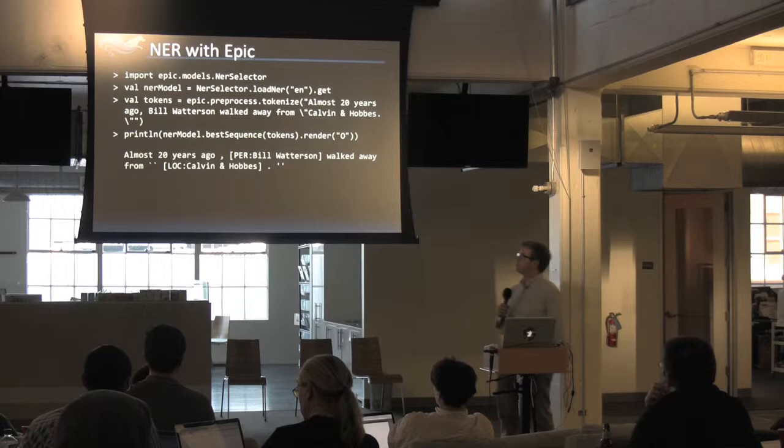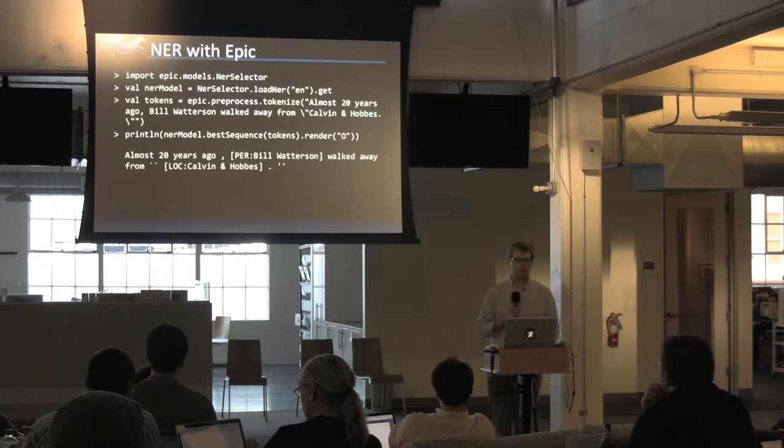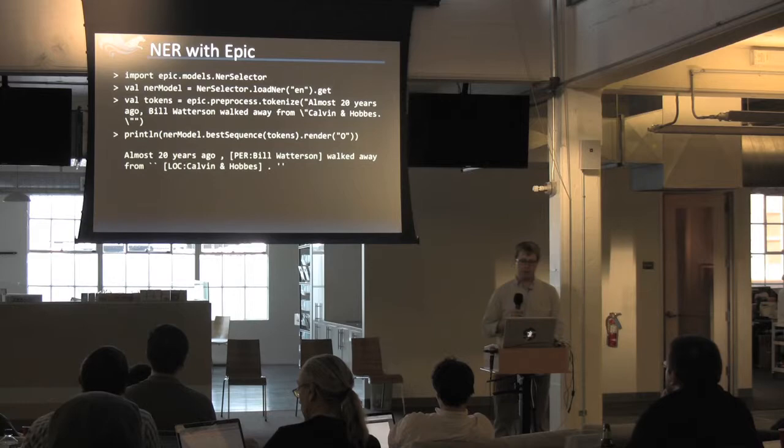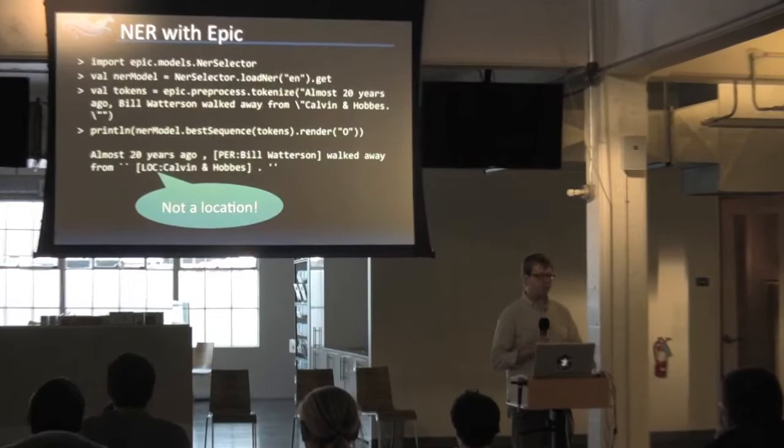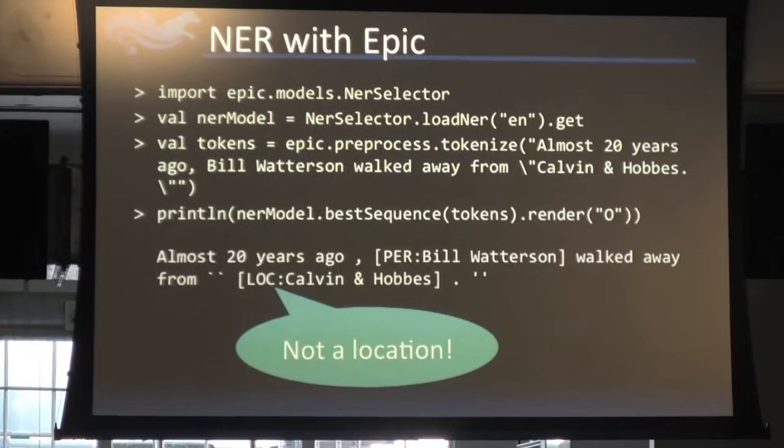We then ask the NER model for the best possible sequence of NER types. We get output like: 'almost 20 years ago, a person: Bill Watterson, walked away from a location: Calvin and Hobbes.' Obviously Calvin and Hobbes is not a location, but you can understand why it might have made that error. Let's try to figure out how we can maybe fix it.